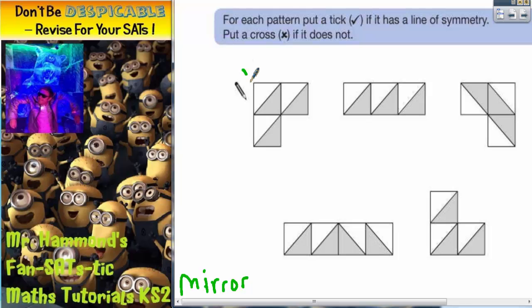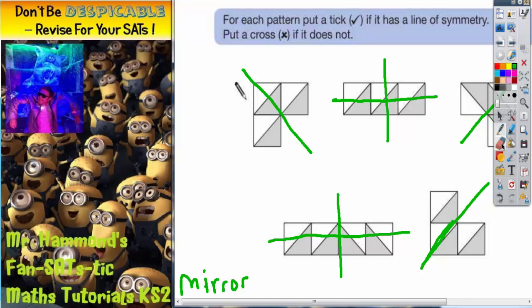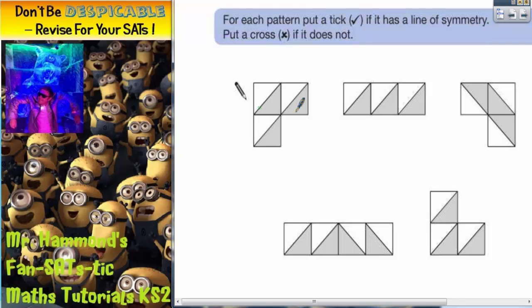Now if all we were dealing with was plain squares not split into triangles and not shaded then actually they would all have a line of symmetry. We'd have a line of symmetry down there for that one. We'd have a couple of lines of symmetry here. We'd have a line of symmetry there. We'd have one down there and across there. And we'd have one slanted through that shape. However, the shaded bits of the triangles really affects things. So what we can't just do is go drawing in lines of symmetry and ignoring the shaded triangles.